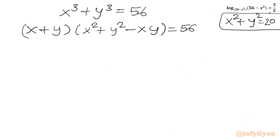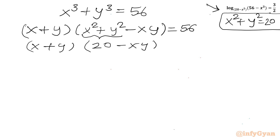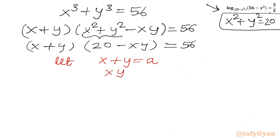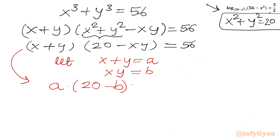Let x + y = a and xy = b. Substituting, we get a(20 - b) = 56. Squaring x + y = a gives x² + y² + 2xy = a², so 20 + 2b = a².